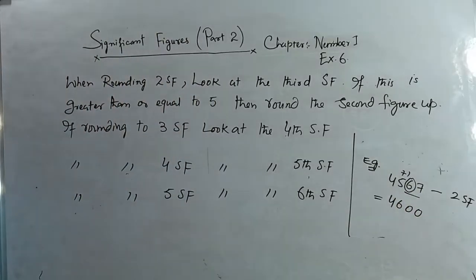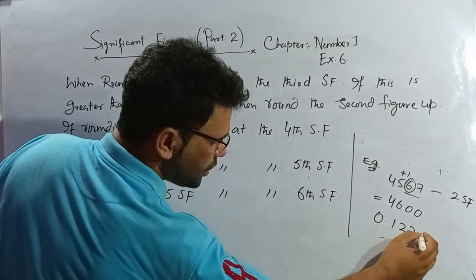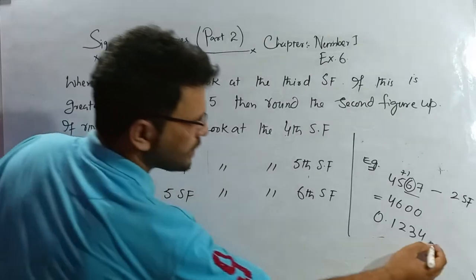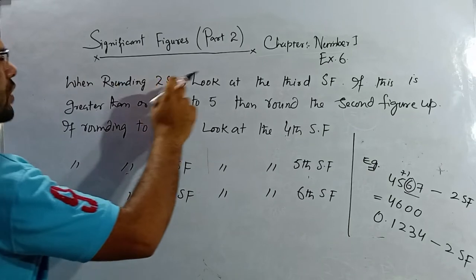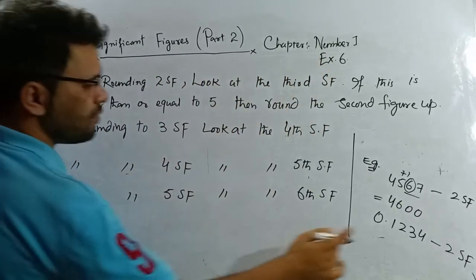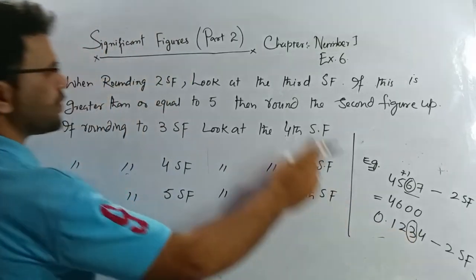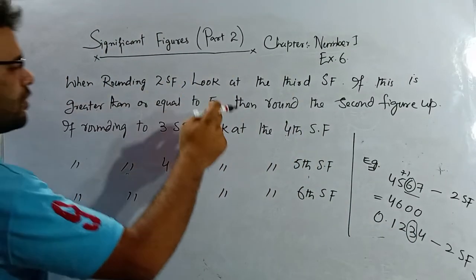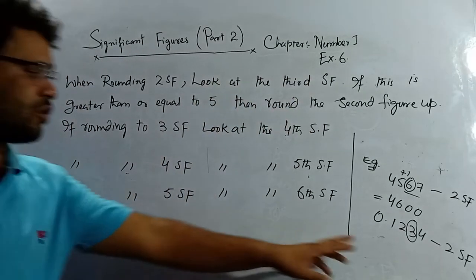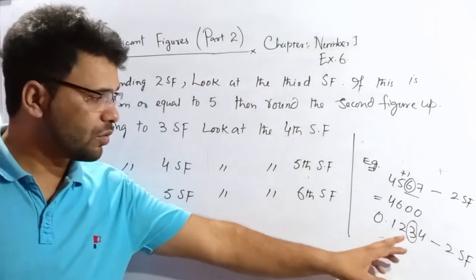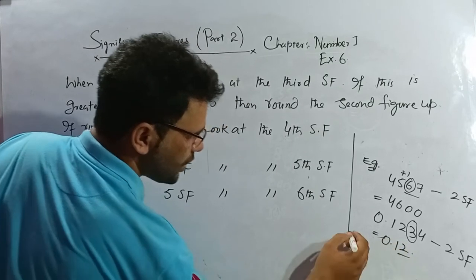One more example: if I have 0.1234 and I have to write it corrected to 2 SF, I look at the third significant figure. One, two — and three is the third. If it is greater than or equal to five... it is not greater than nor equal to five, so I keep it as it is. The answer is 0.12.